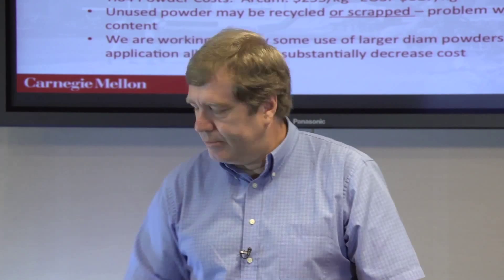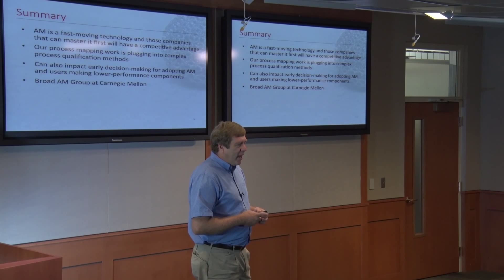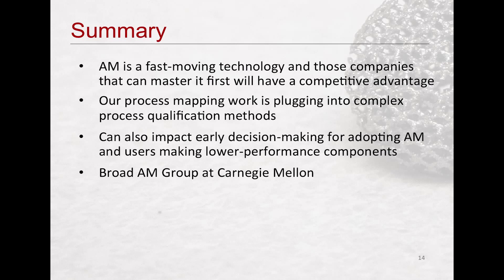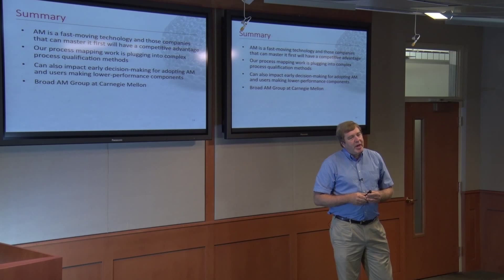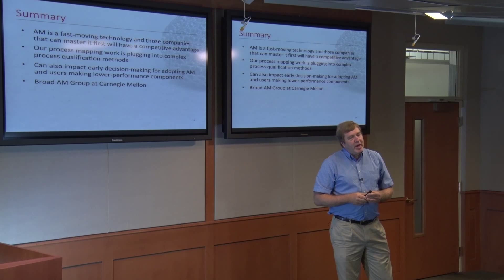If you haven't been keeping up with additive manufacturing, you really need to. What's happened over the past four years has been remarkable — from just the promise of building three-dimensional parts out of metals to actually doing it, and now having parts in the aerospace industry set for production right now. What we're doing is mapping out process outcomes in terms of process variables, which can plug into process qualification methods for aerospace, shrinking the times and costs to qualify a process. But we can also give technical advice to people considering adopting direct metal additive manufacturing or just getting started. It's not just me at Carnegie Mellon — we have more than 20 faculty doing something in additive manufacturing, with quite a few working directly on metals processes.